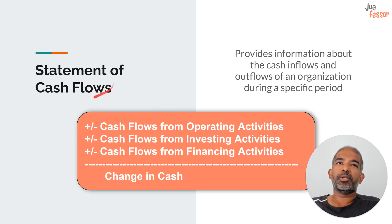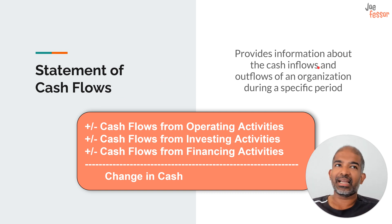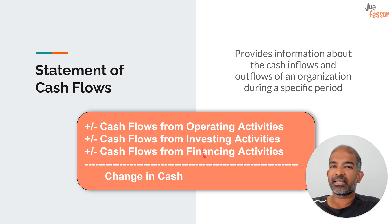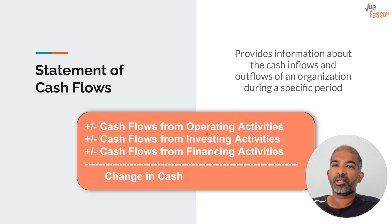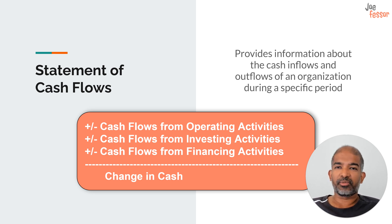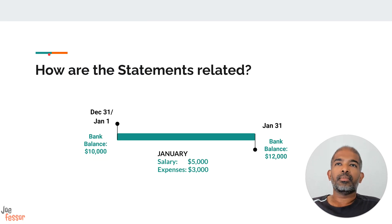Finally, the statement of cash flows provides information about cash inflows and cash outflows during a specific period. These cash flows are categorized conveniently into operating, investing, and financing activities, so we can get a clearer picture of how cash is generated and utilized by the firm. This statement complements the income statement and the balance sheet because it gives a clearer picture of a firm's liquidity and solvency.